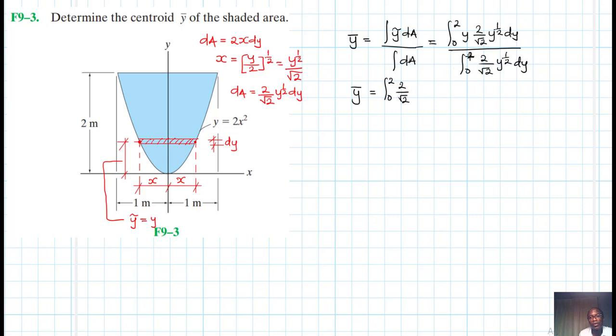So our y-bar is just going to be equal to, if you evaluated this, I will have integral 0 to 2, 2 over root of 2, y to the power 3 over 2 dy, divided by integral 0 to 2, 2 over root of 2, y to the power 1 over 2 dy.